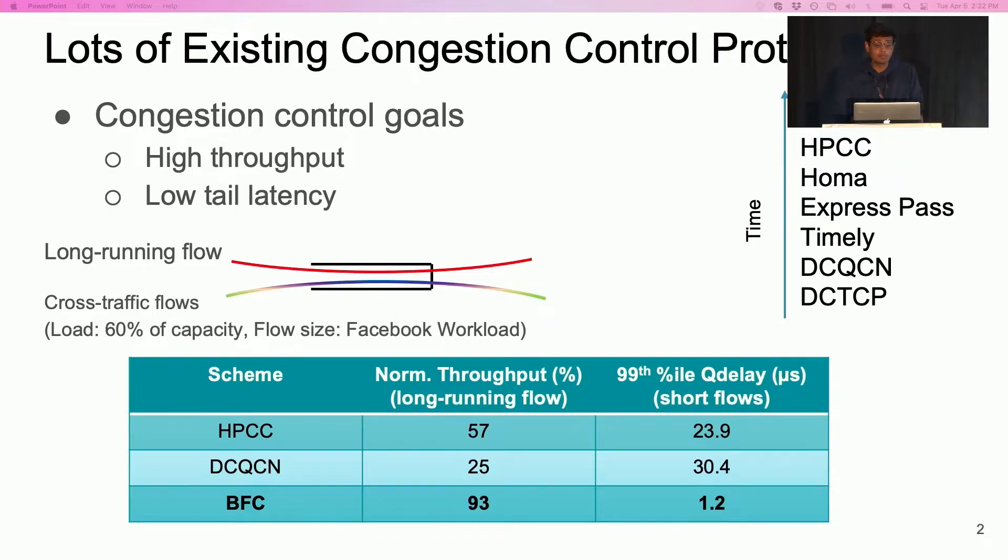In particular, BFC proposes a new architecture for congestion control in data center networks. To help you understand the need for such a redesign, I'll begin by explaining the fundamental drawbacks in existing approaches.